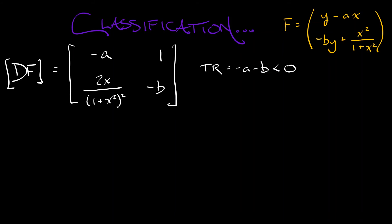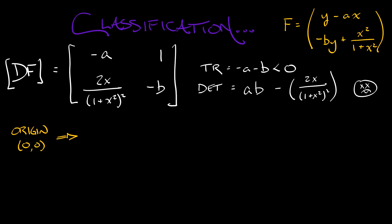That means we're going to be looking at sinks, saddles? It all depends on the determinant, which is ab minus 2x over quantity 1 plus x squared squared. That's a little messy. Let's take a look at what is happening at the origin. That's no problem. We have an upper triangular derivative matrix. The eigenvalues are minus a, minus b. This is a sink.